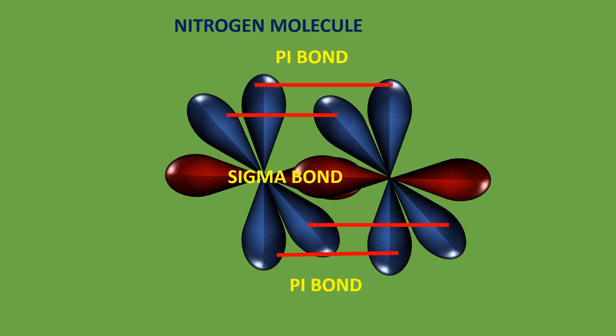Thus, with one sigma bond and two pi bonds, nitrogen molecule is a triple bonded molecule.